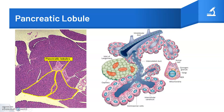The functional unit of the exocrine pancreas is the acinus. Acini are organized collections of exocrine cells that surround a central lumen. These polarized cells have basophilic rough endoplasmic reticulum at their base and eosinophilic granules at their apex.